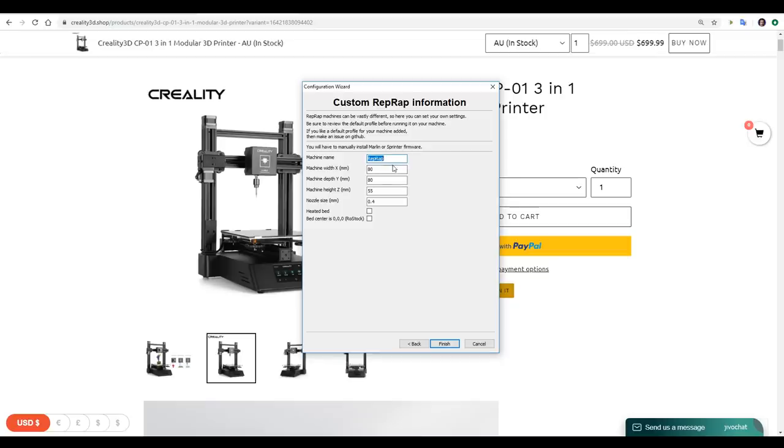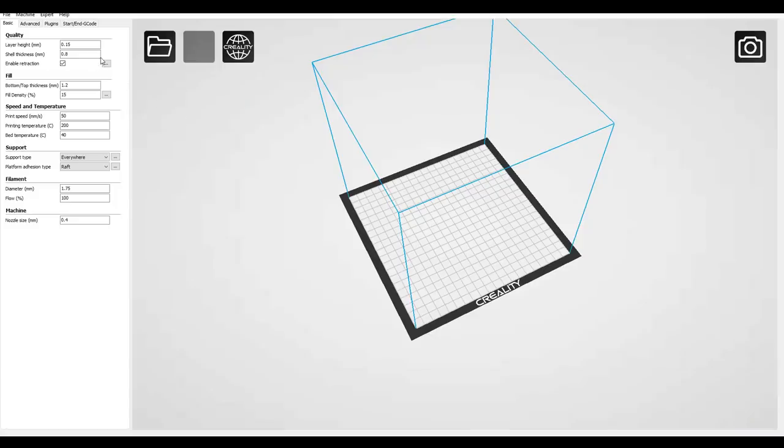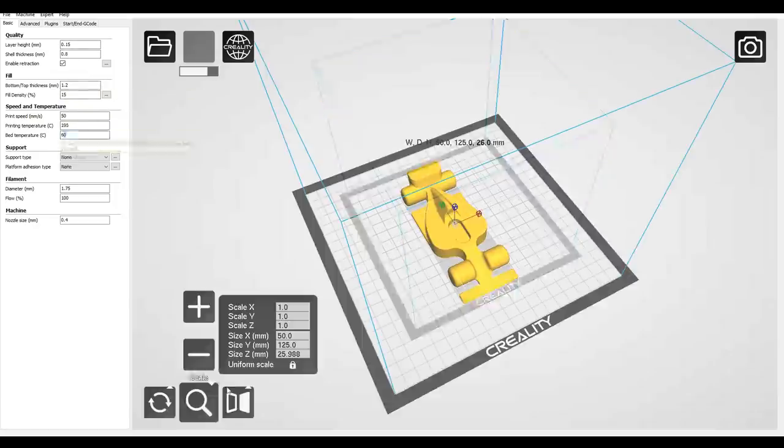Next up, I thought I'd try the pre-configured slicer, so I followed the directions in the instruction manual to set up a custom machine with the correct dimensions. This is an older version of Cura, skinned by Creality, and it's got all of the slicing settings already in place.